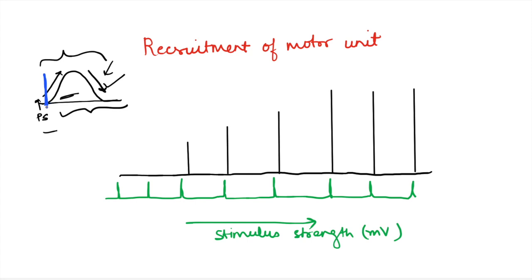Now let's understand the concept of recruitment of motor units. In the video on simple muscle twitch we said that a simple muscle twitch can be recorded even if only a single motor unit is contracting — some muscle fibers are contracting and we record the contraction and relaxation, even though the whole muscle may not be contracting.